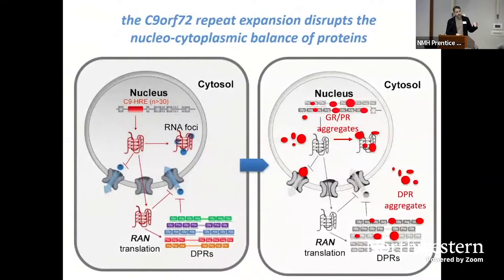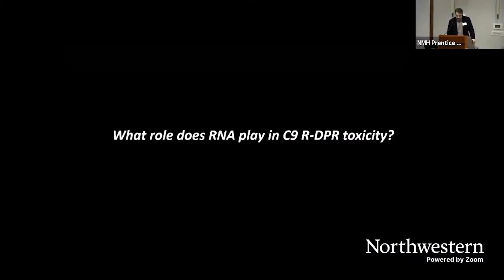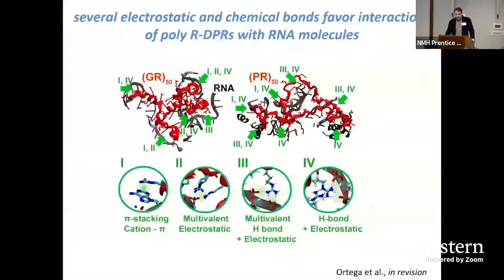We and others have shown that because the long RNA binds and sequesters RNA binding proteins, and because the peptide repeat proteins bind and sequester proteins encompassing so-called low complexity domains, there is an imbalance in the nuclear-cytoplasmic proteome. The arginine-rich GR and PR aggregates, which can be cytosolic as well as nuclear, have been shown to be the most toxic. The question we got interested in addressing is: what role does RNA binding play in the toxicity of these arginine-rich dipeptide repeat proteins, and can we utilize that information to design potentially therapeutic strategies?